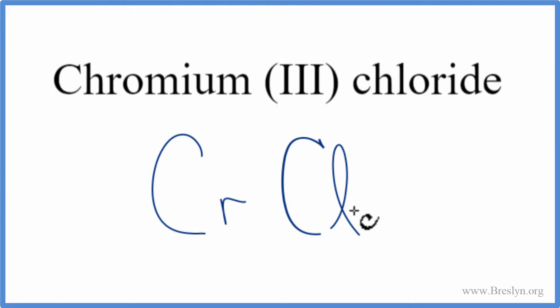Chromium is a metal and chlorine is a non-metal. Metal and non-metal gives us an ionic compound. We have to consider the charges on the chromium and the chloride when we write the formula for chromium three chloride.